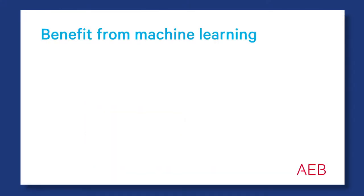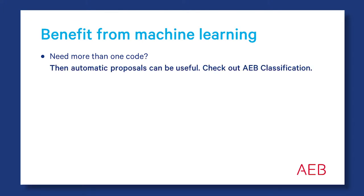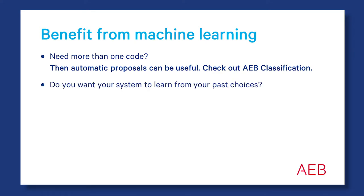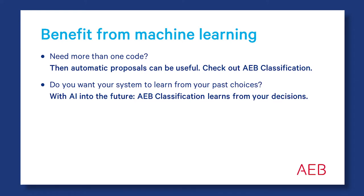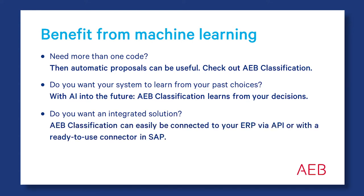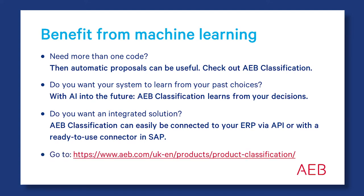But what if you need more than one, 100 or even 1000 commodity codes? Perhaps an automatic proposal would be useful. And if you want your system to learn about the choices you've already made in the past, you can use software to learn from those past decisions — having this technology streamlined and connected to your ERP could accurately and efficiently improve the process. Check out the advantages of AEB classification on our website.